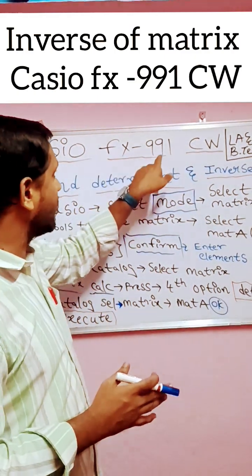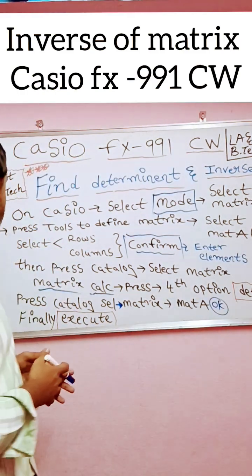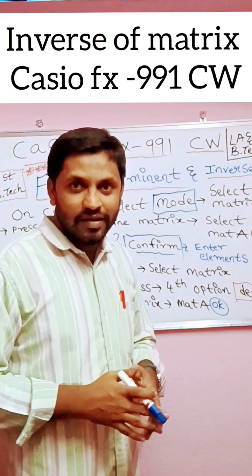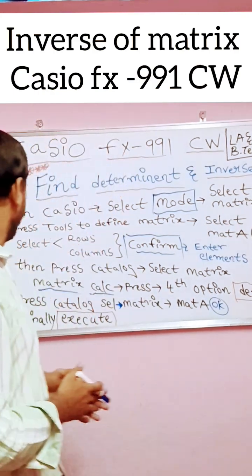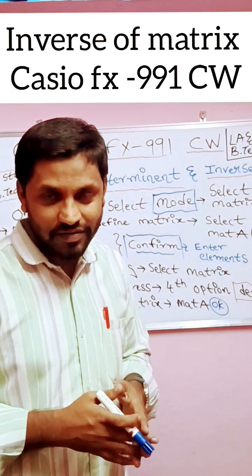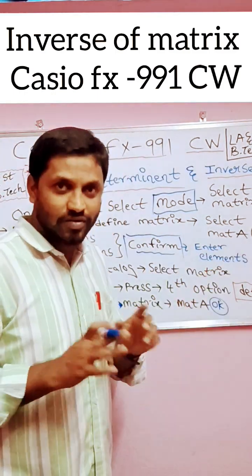So let us see. You need to turn on the Casio, select Mode option, select matrix option, then press Tools to define matrix right side, then select matrix A. So matrix A, B, C, D are available, but you need to select first option matrix A.